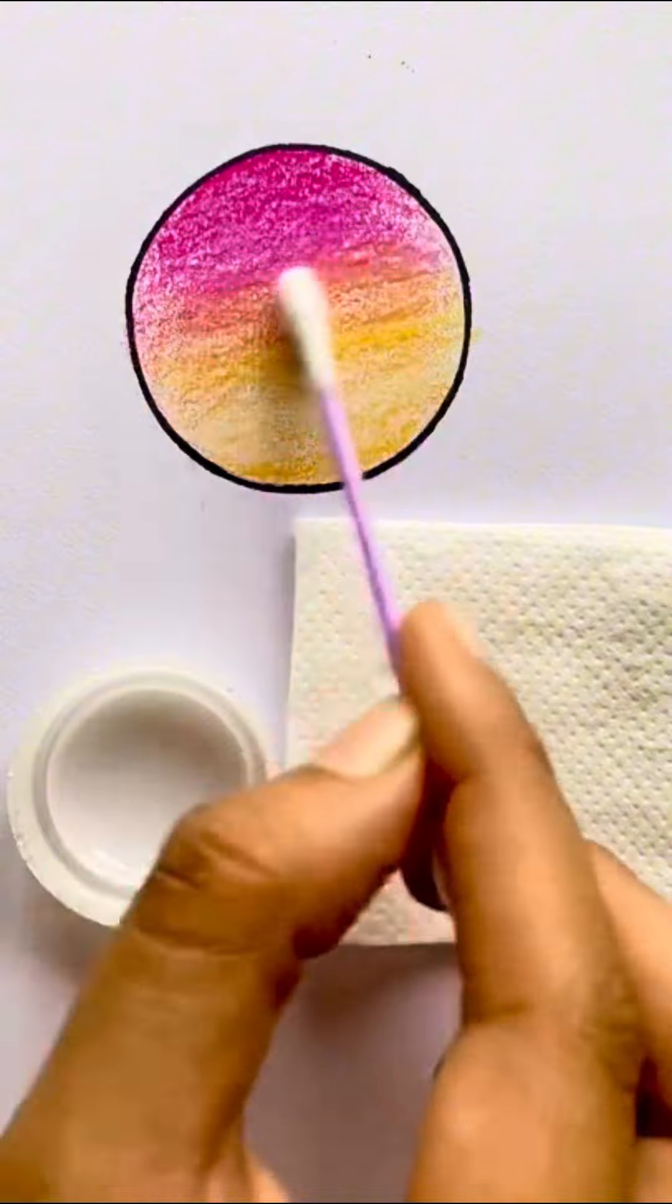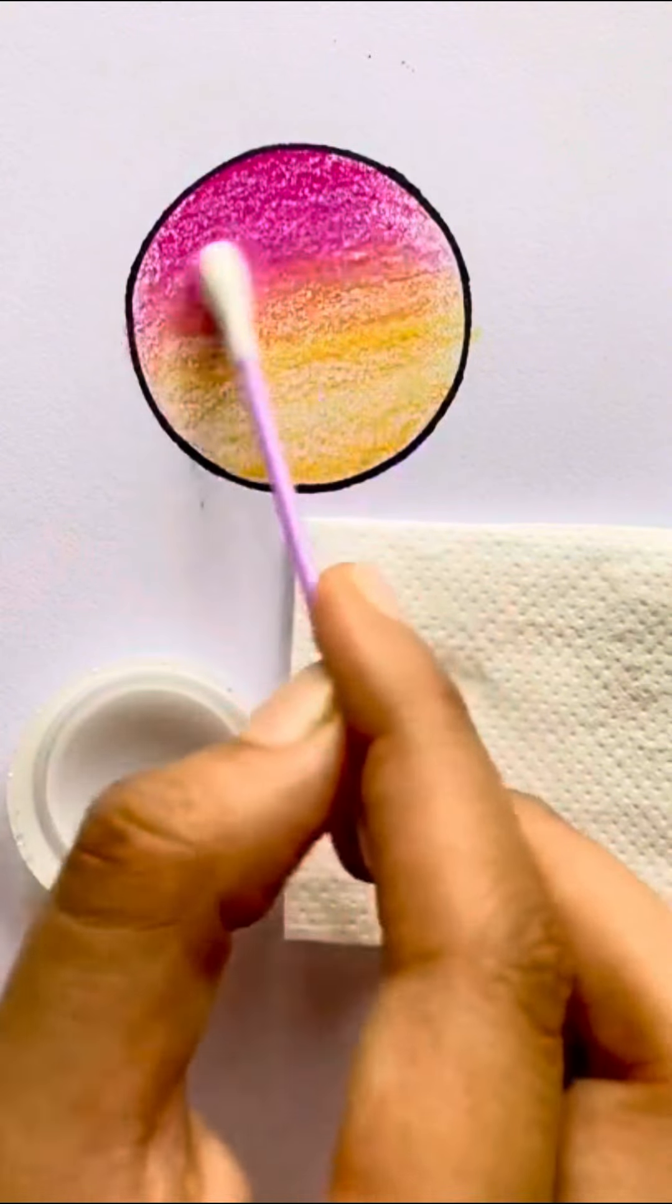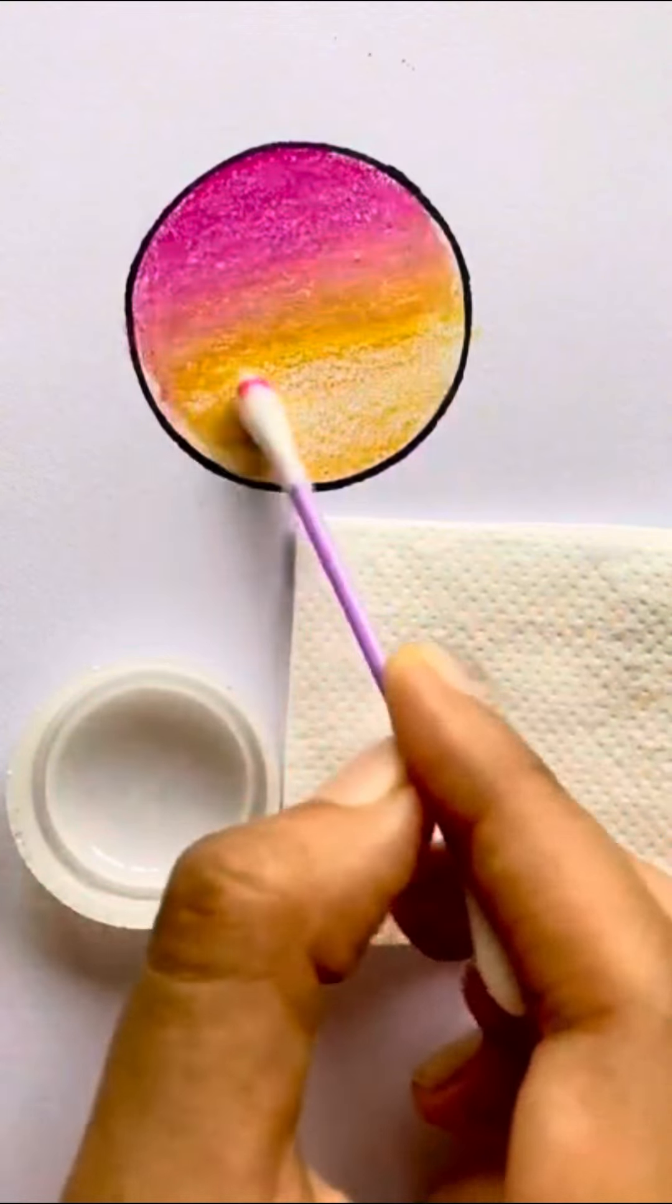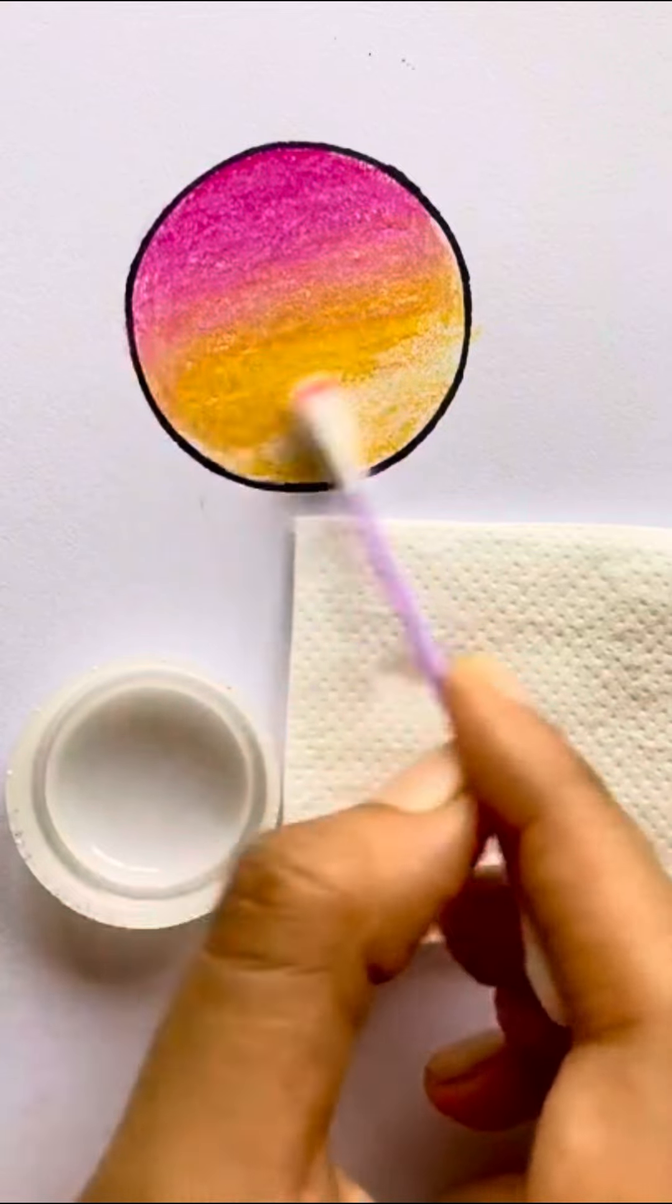Also avoid using thin paper such as printer paper because this may cause the solvent to bleed right through. And here you can see how effective baby oil is.